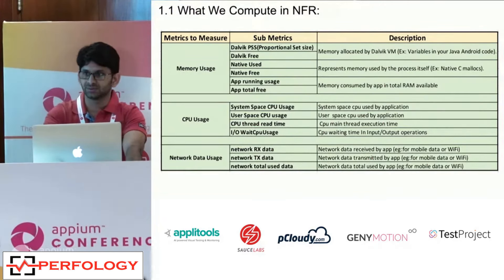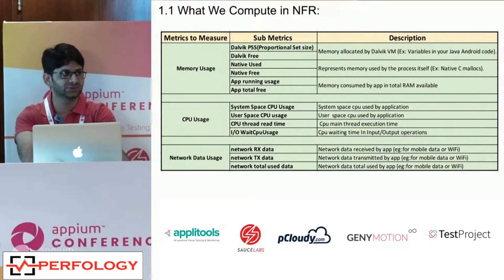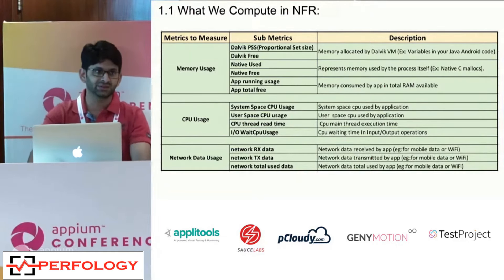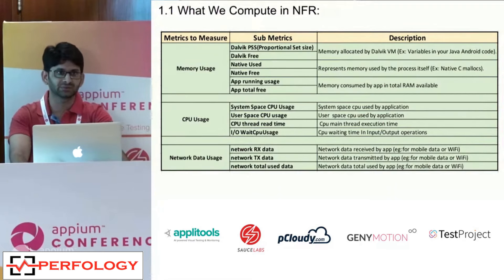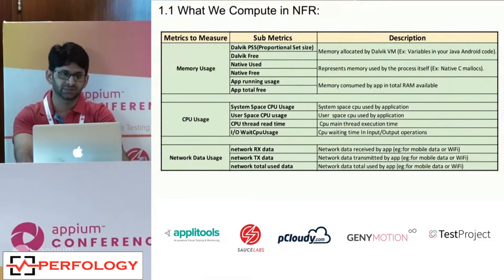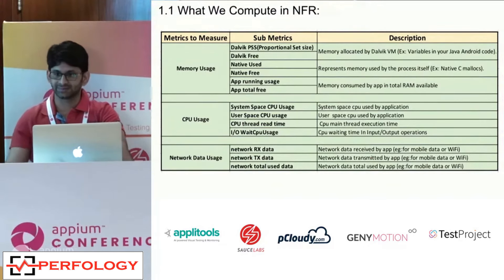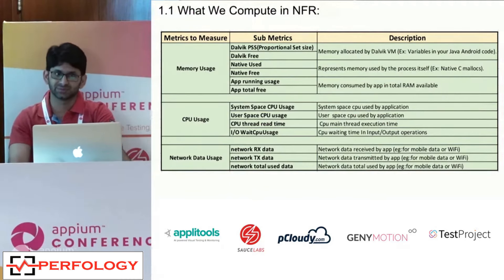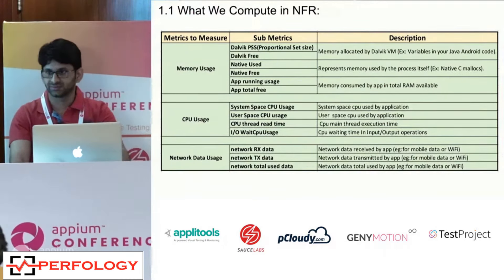For CPU, we capture both system space and user space CPU. System space CPU is used by the kernel, while user space covers processes running inside our application. We also capture IO wait — how much time any IO operation takes. The third metric is network data used by the application at the test case level. RX data is data received by the application, TX data is data transmitted, and total data is the sum of both.